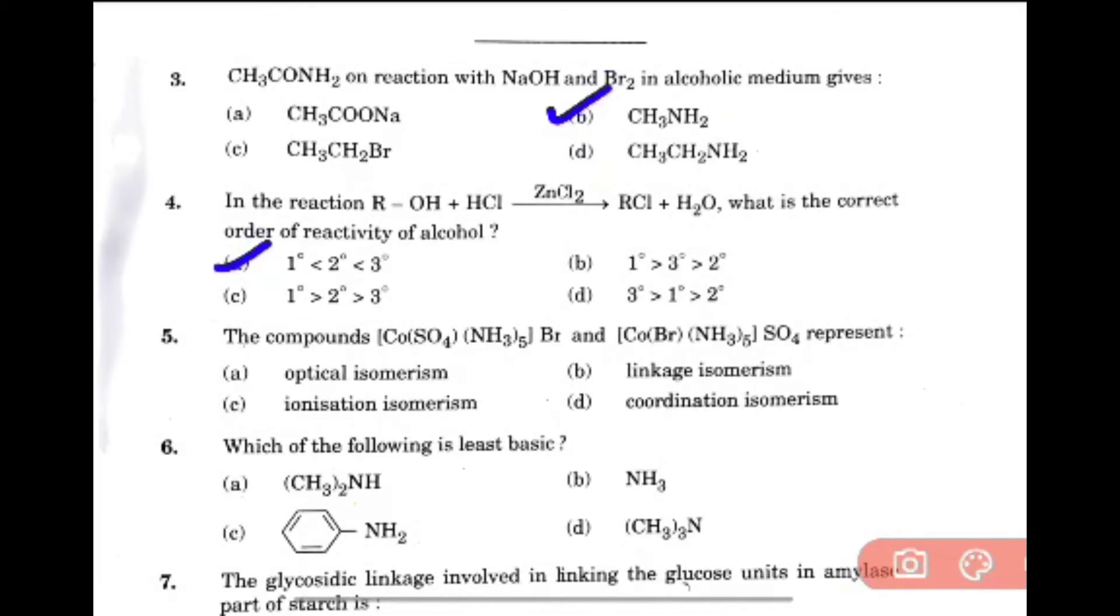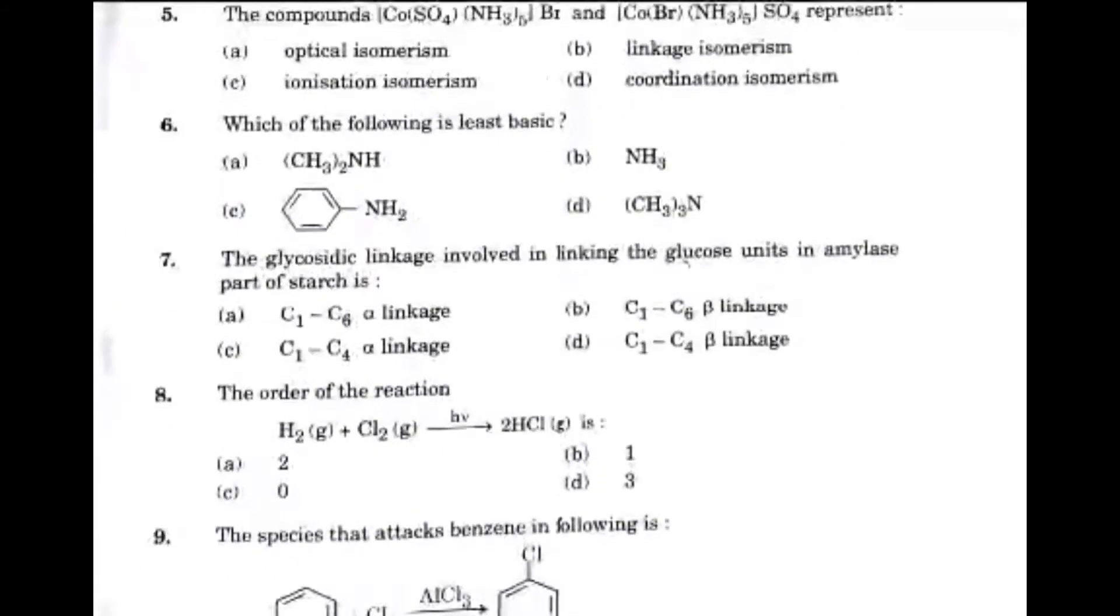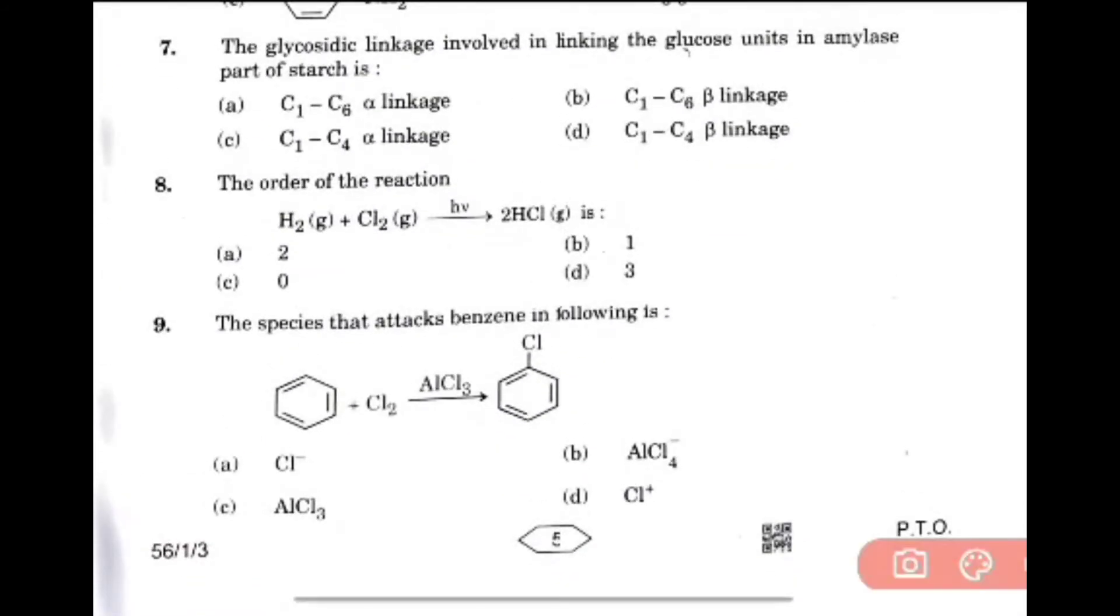The compound is given to represent ionization isomerism. Which of the following is a list basic? That is option C. The glycosidic linkage involved in linking the glucose units in amylose part of starch, that is option C, C1-C4 alpha linkage. Order of the given reaction, that is zero order reaction. The species that attacks benzene in the following is C+, electrophilic substitution.